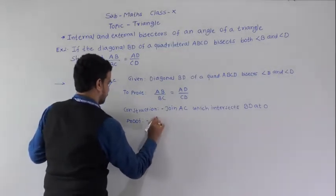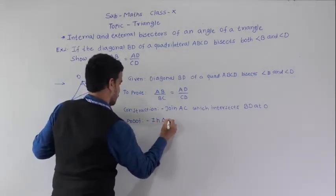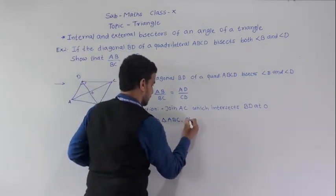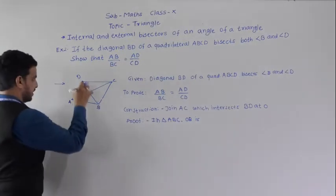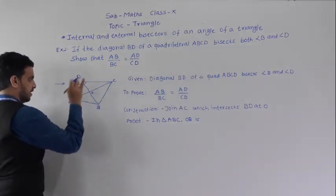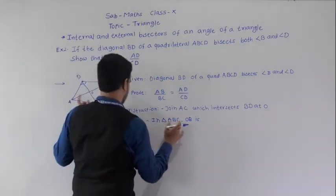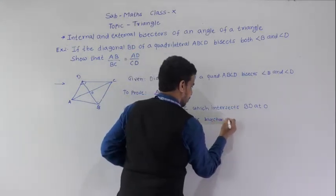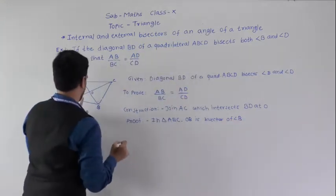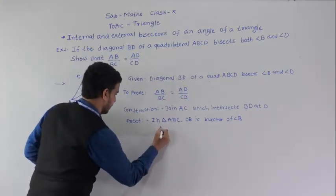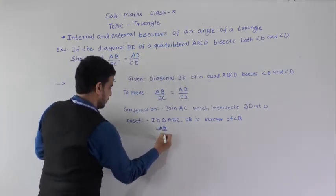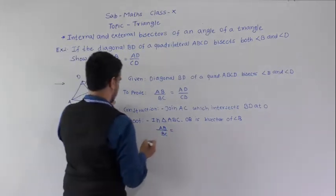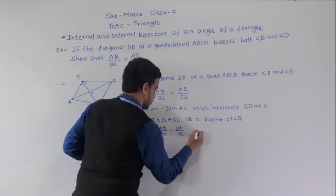Since BD bisects angle B, in triangle ABC, OB is the bisector of angle B. Therefore by the internal bisector theorem, AB/BC = OA/OC. This is equation 1.